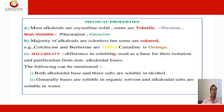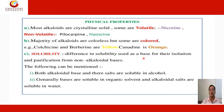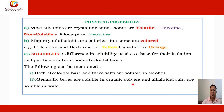Physical properties: Most alkaloids are crystalline solids. Some are volatile, for example nicotine; others are non-volatile, like pilocarpine and hyoscine. The majority of alkaloids are colorless, but some are colored — for example, colchicine and berberine are yellow, and canadine is orange. Regarding solubility, differences in solubility are used as the basis for their isolation and purification from non-alkaloidal substances. Both alkaloid bases and their salts are soluble in alcohol. Generally, bases are soluble in organic solvents and alkaloidal salts are soluble in water.